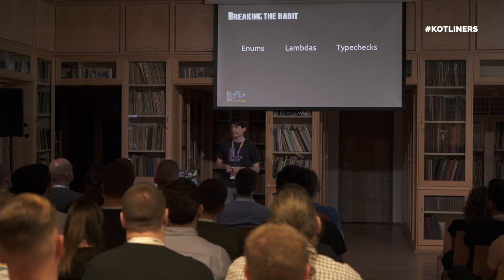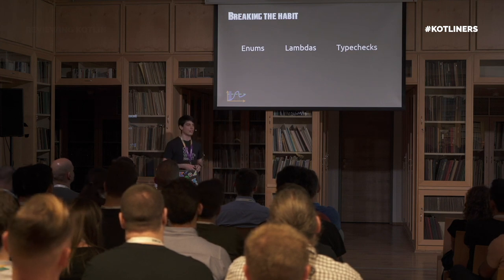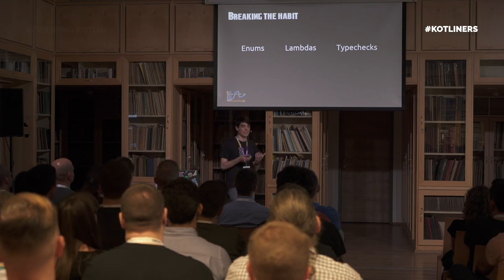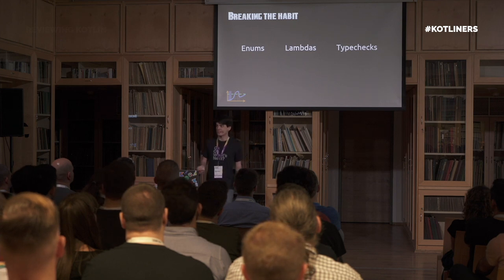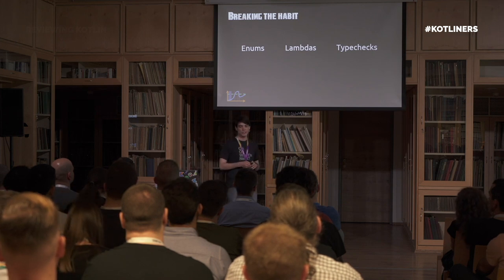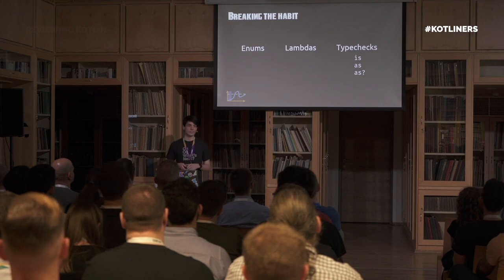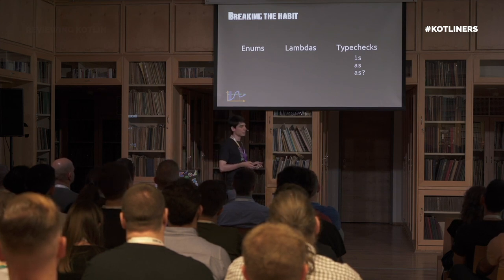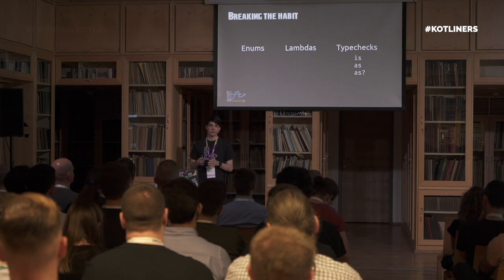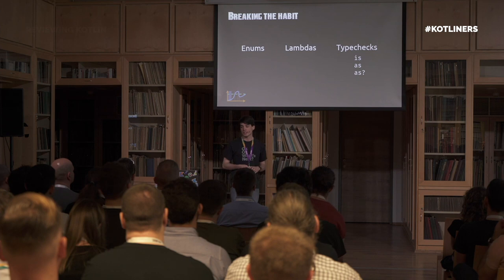We pretended the instanceof operator didn't exist and were supposed to solve everything through object-oriented design, polymorphism, and visitor patterns. But really, type checks are just fine in our modern application code. In Kotlin they're very convenient: you get smart casts after successfully performing a type check, and there is also the safe cast operator, which lets you translate a question of type conformance into a question of nullability that you can handle with all the tools Kotlin gives you for null handling.